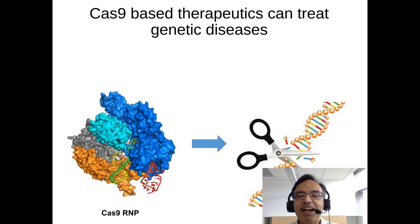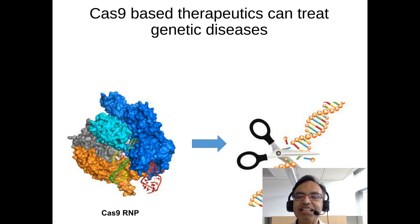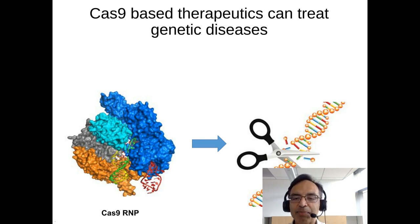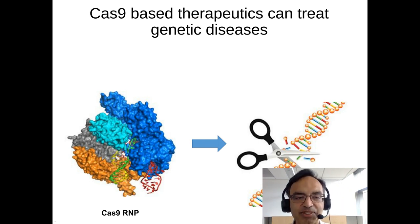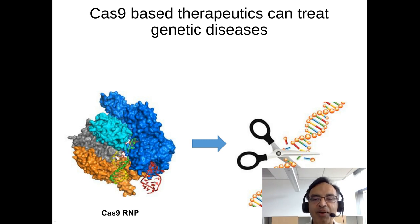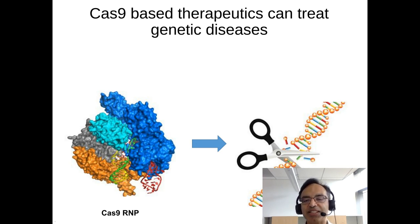Cas9-based therapeutics have the potential to revolutionize the treatment of genetic diseases because of their ability to correct disease-causing DNA mutations and treat a variety of genetic diseases, such as cystic fibrosis and Duchenne's muscular dystrophy. However, converting Cas9 into a therapeutic requires delivering it into cells, and this is challenging because of its large size.